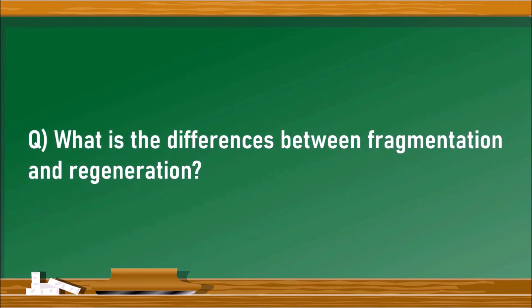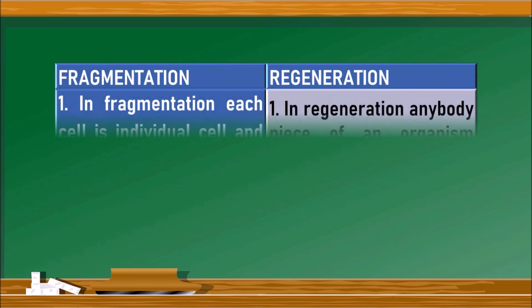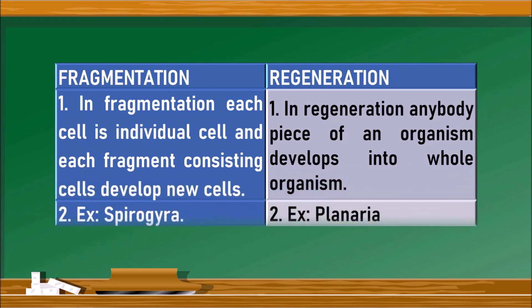These both are different kinds of asexual reproduction. Let us see the differences. For this, let us draw a table with fragmentation and regeneration on either side. In fragmentation, each fragment consisting of cells develops new cells.